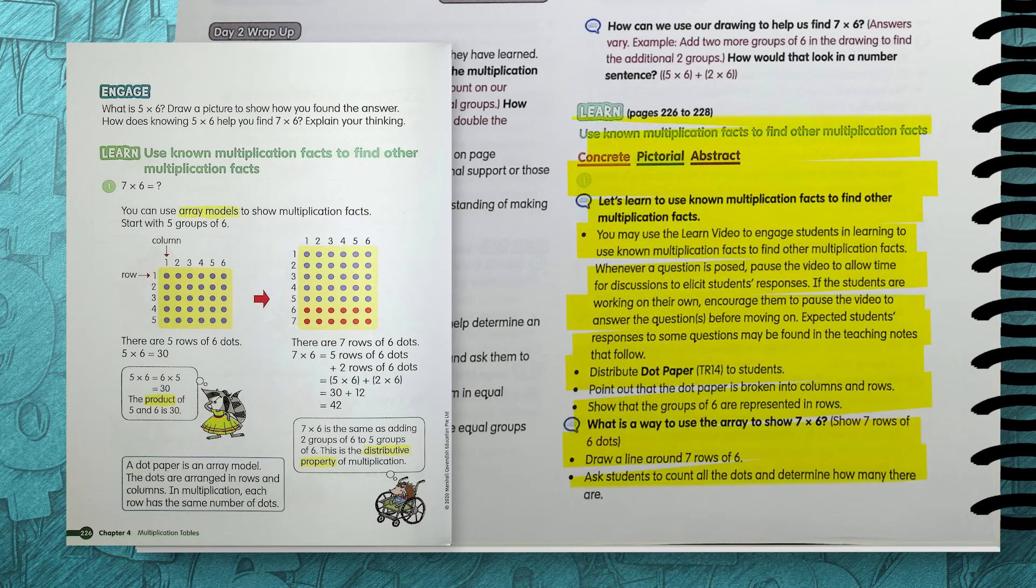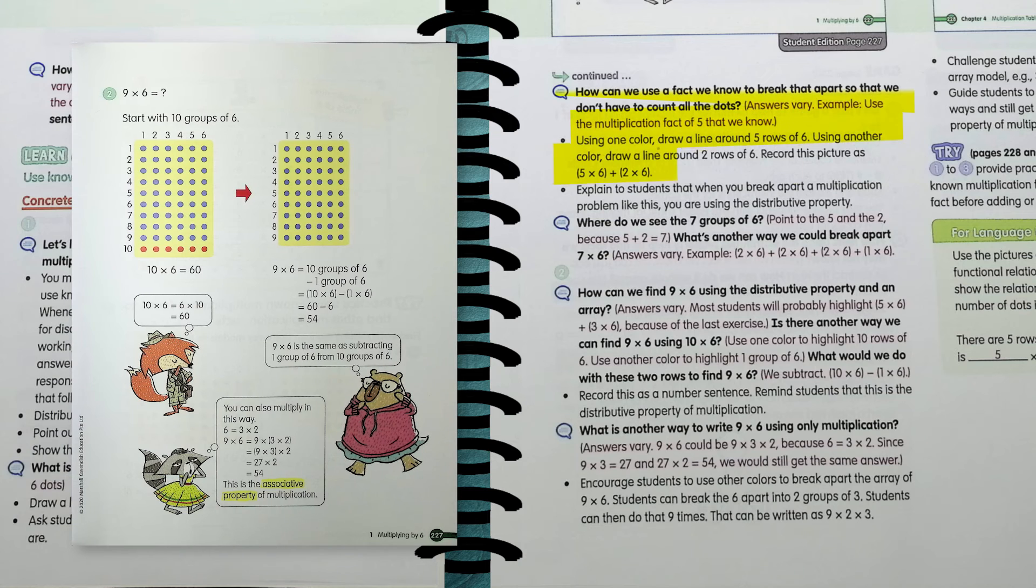Next, the learn section, you can help your students to connect their model from the engage section to see that 2 or more groups of 6 can be added to 5 times 6 to find 7 times 6 using an array model. This is a quicker way to find the product than trying to skip count. You can challenge your students to use this understanding by asking your students how 10 times 6 can be used to find 9 times 6. Help your students to see that they can simply subtract a group.